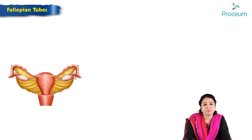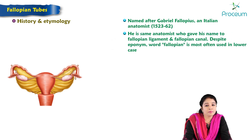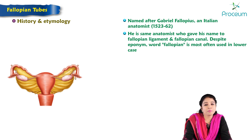The fallopian tube is named after Gabriel Fallopius, an Italian anatomist who lived between 1523 and 1562. He is the same anatomist who gave his name to the fallopian ligament and the fallopian cannula. Despite the eponym, the word fallopian is often used in lower case.